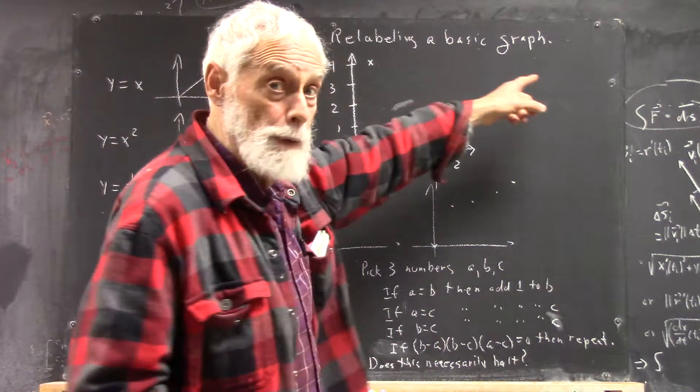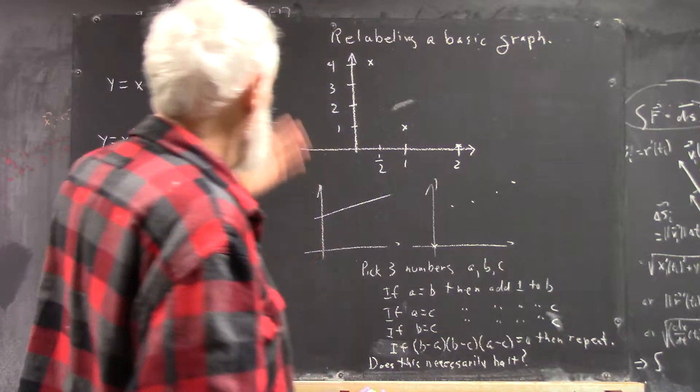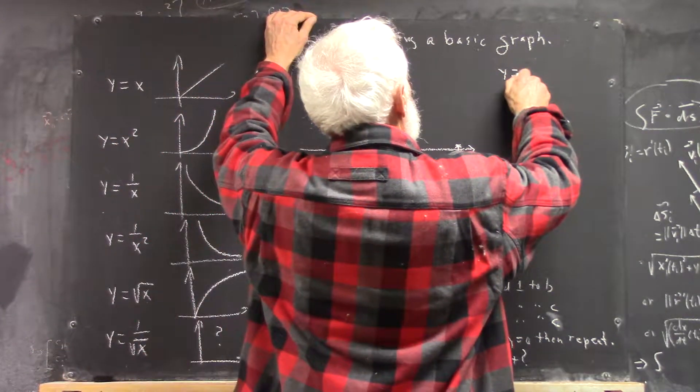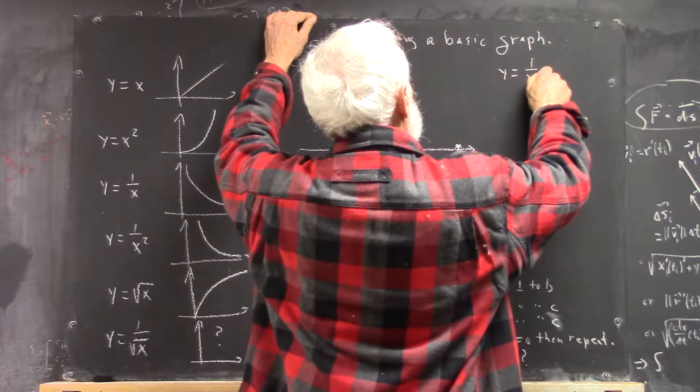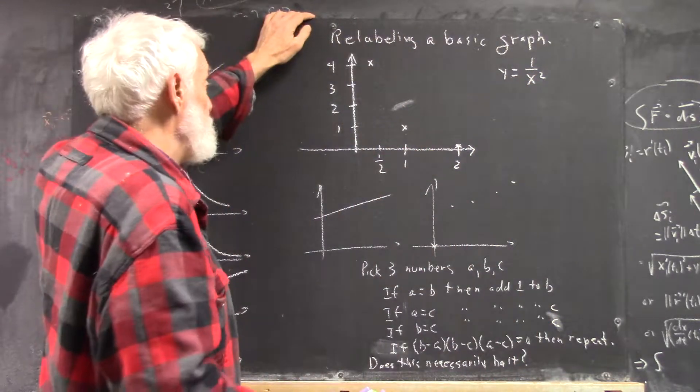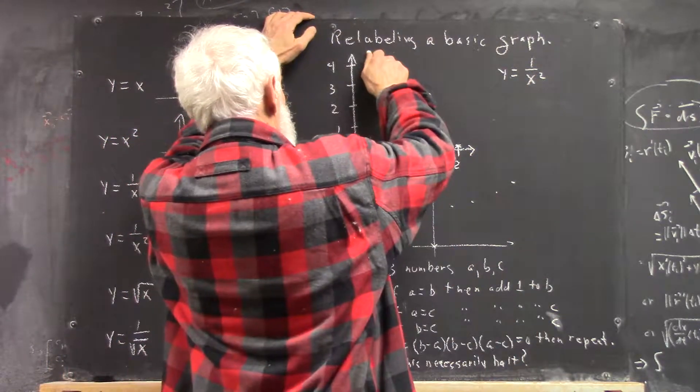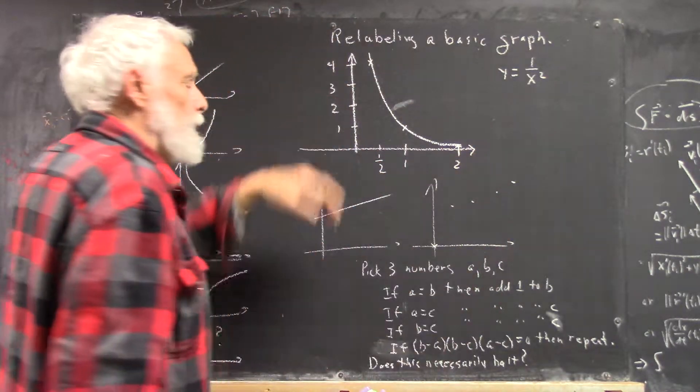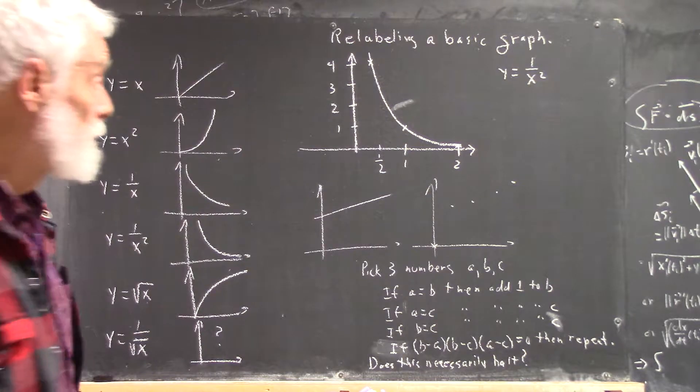We want to talk a little bit about relabeling a basic graph. We have here the points on the graph of the basic function y equals 1 over x squared. And we know how to get these points, so we can sketch a reasonable curve for the graph.